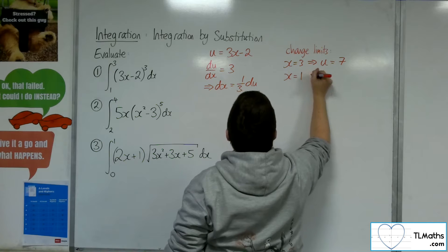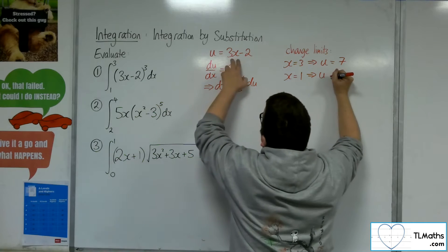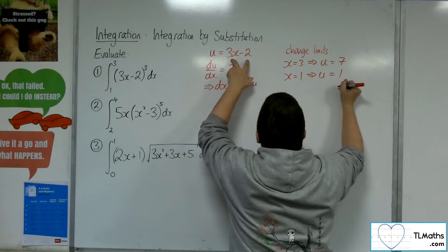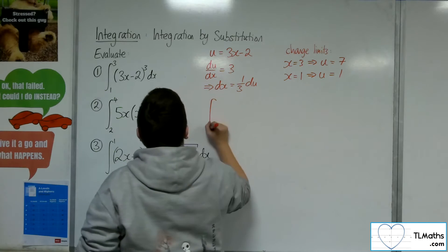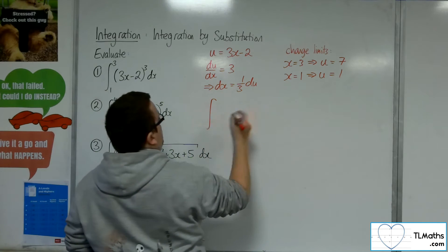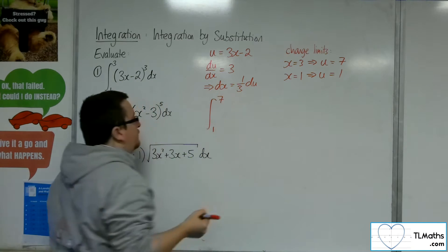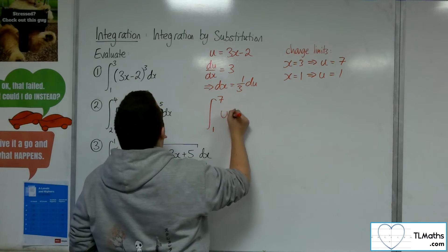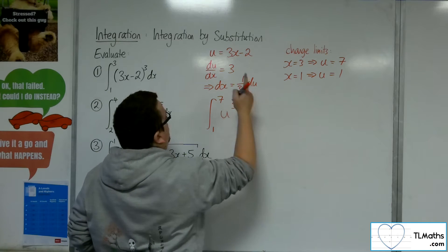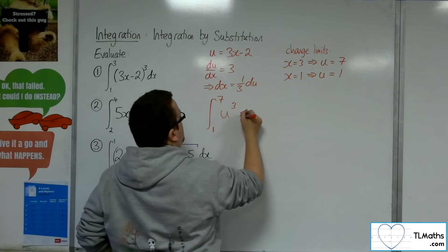And when x is 1, u will be 3 lots of 1 take away 2, which is just 1. So we can integrate this now between 1 and 7. The 3x minus 2 is u, and with u cubed, we've got the dx as 1 third du.